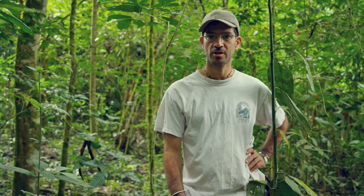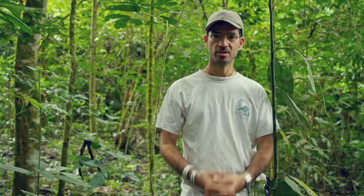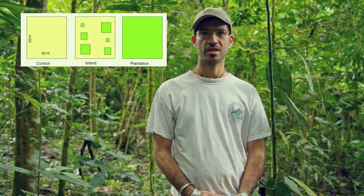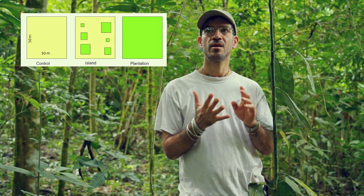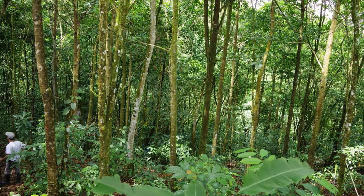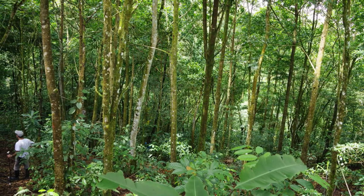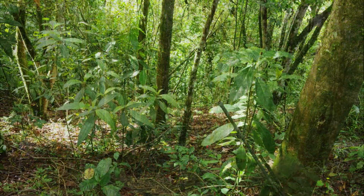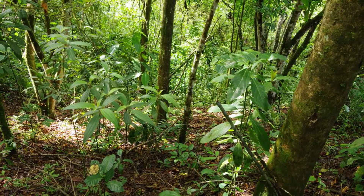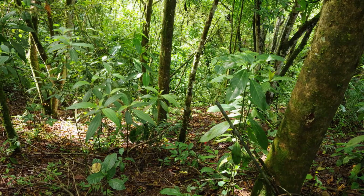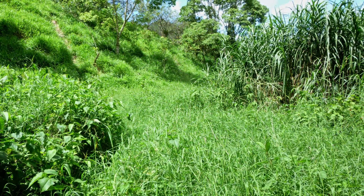We started our research over a decade ago where we established 16 sites with three different treatments. Each treatment is 50 by 50 meters, or a quarter hectare. We had a plantation where we planted the entire area with four different species of trees, an island or nuclei system where we used the same area but instead of planting the entire system we planted different-sized patches of trees, and then we had a control — an area where we didn't plant.